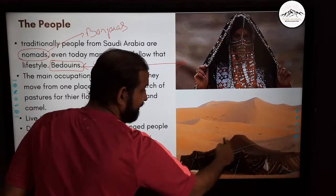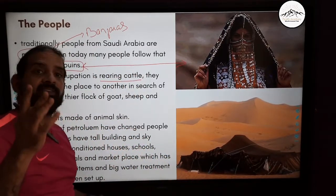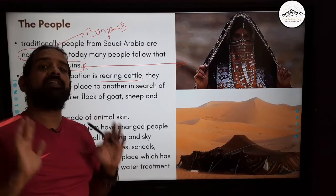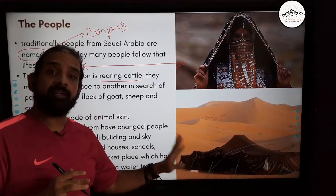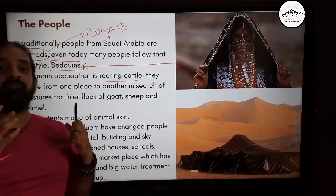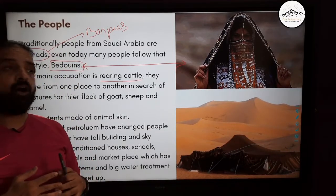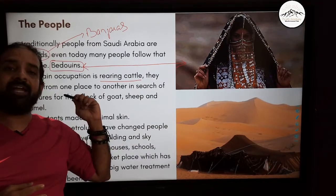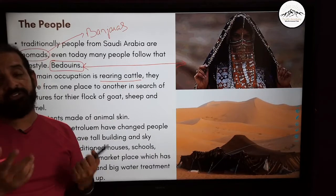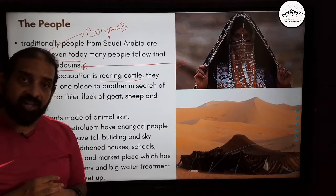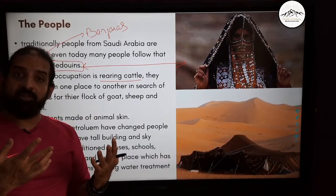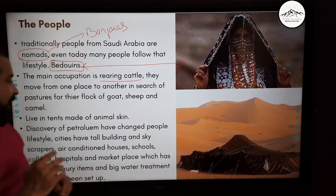They live in tents made of animal skin. But now, as Saudi Arabia has become a very rich country, people are moving away from the nomadic life and staying in luxury homes, buildings, and offices. They have luxury cars, super malls with all luxury items.